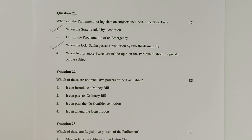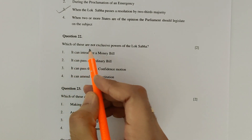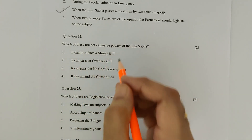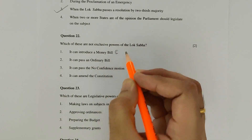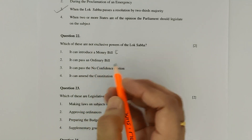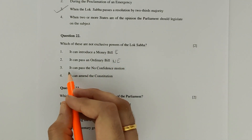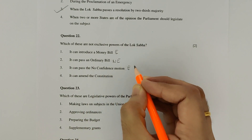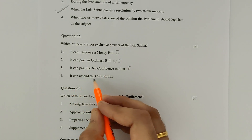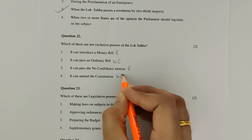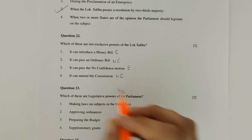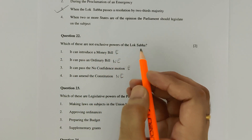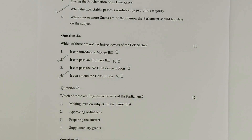Question 22: Which of these are not exclusive powers of the Lok Sabha? Introducing a money bill and passing a no-confidence motion are exclusive powers. Passing an ordinary bill and amending the constitution are not exclusive powers. Hence options 2 and 4 are correct.